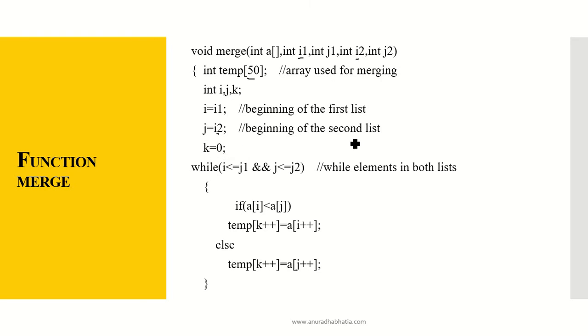This is beginning of the first list, beginning of the second list. While i is less than j1 and j is less than j2, that is while elements are there in both the lists, if a[i] is less than a[j], then temp[k++] and a[i++]. So a[i] will be copied. Else, temp will be having a copy from the array j and this is how it will be merged.